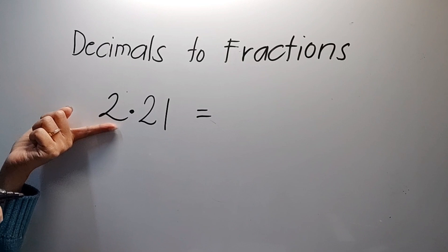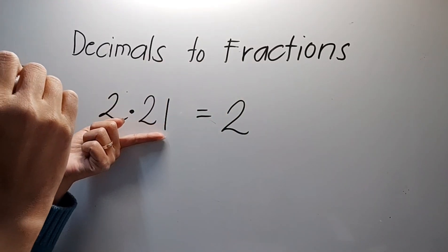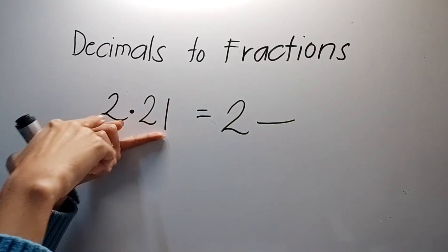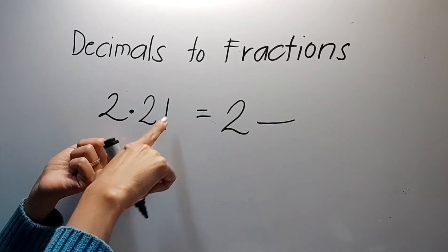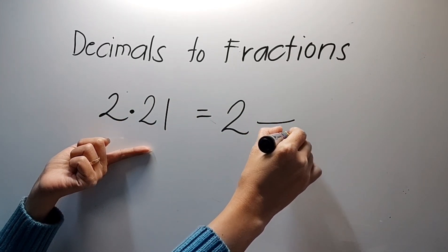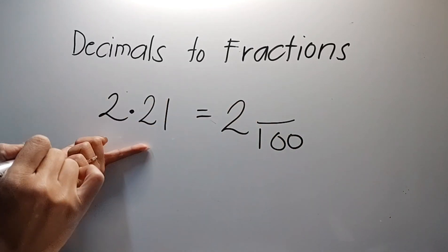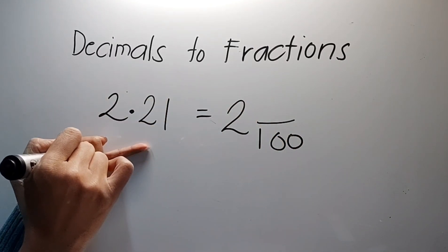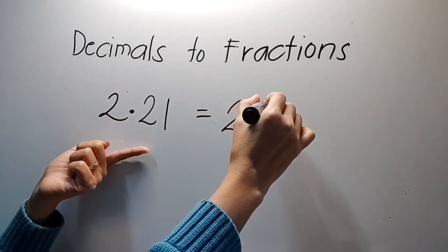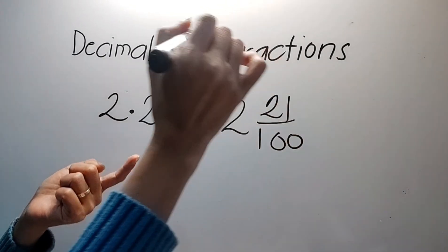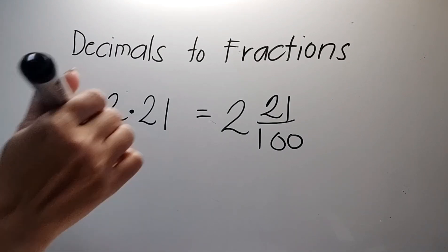Isa pang halimbawa. Kopyahin yung whole number. And then ilang zeros yung denominator — one, two. And then maglagay ng one — that is one hundred — and copy. So two and twenty-one hundredths.